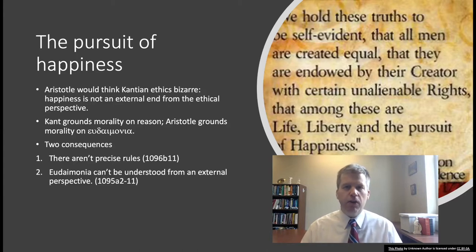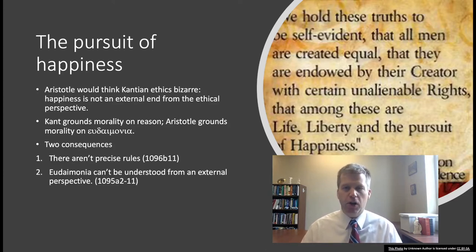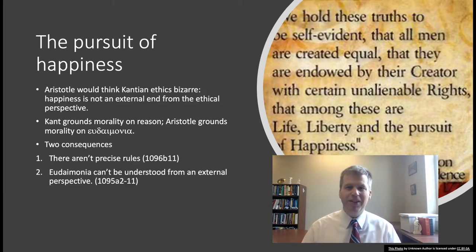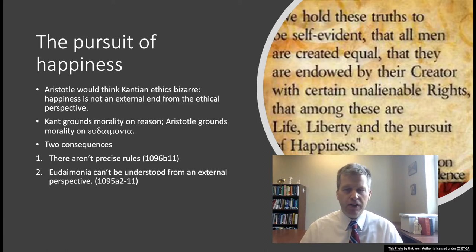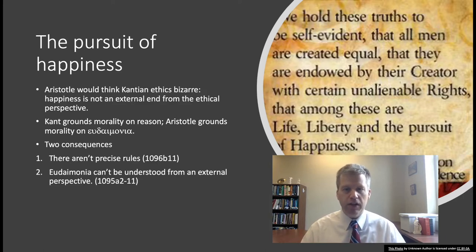For Aristotle, the pursuit of happiness is the chief goal for ethical life. Aristotle would think Kantian ethics is bizarre: from Kant's perspective, happiness is external to ethics because you're reasoning about what reason requires, putting distance between your desires and the requirements of morality. For Aristotle, happiness and the satisfaction of human desire aren't external from the ethical perspective. For Kant, ethics is grounded in reason; for Aristotle, what grounds morality is eudaimonia.